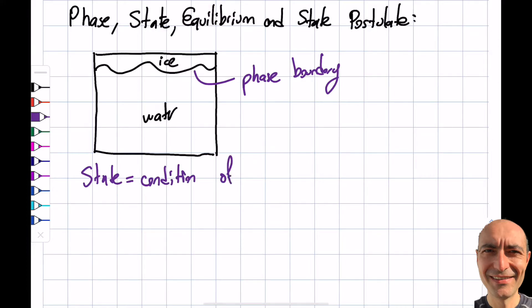State is basically the condition of my system that I define, and this is defined by the properties or the characteristics that I have. That's gonna determine my state and the question may come to your mind: how many properties do I need to define a state?